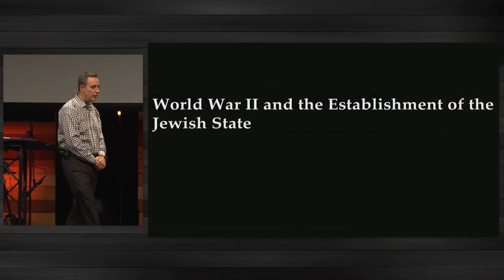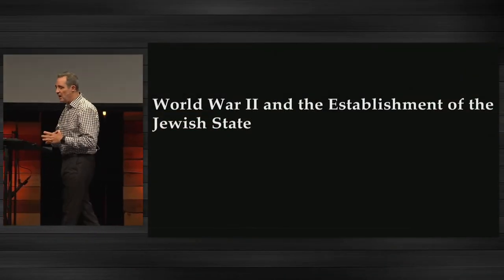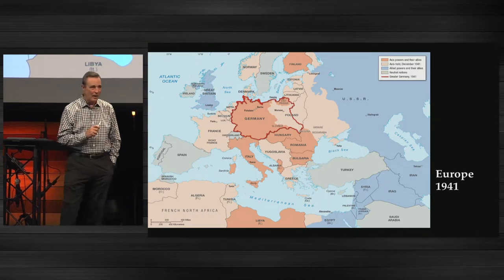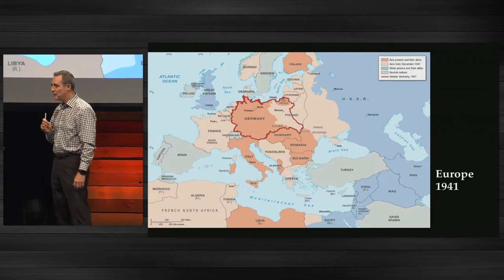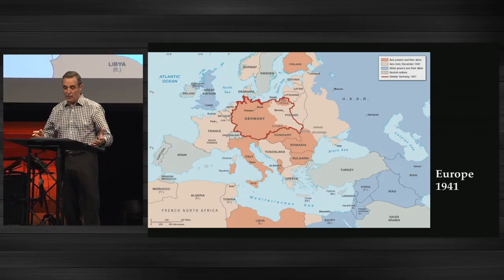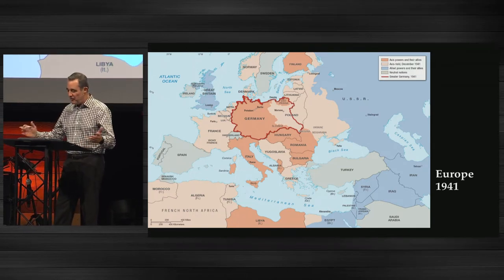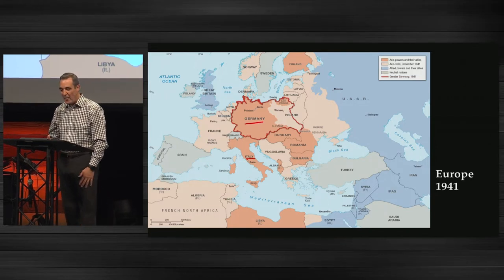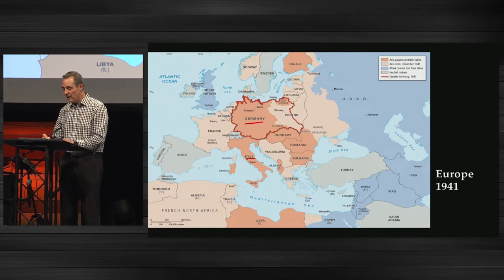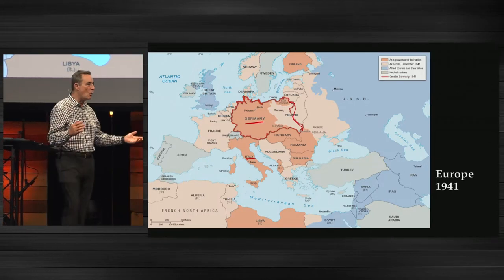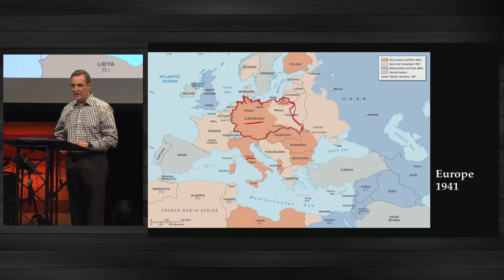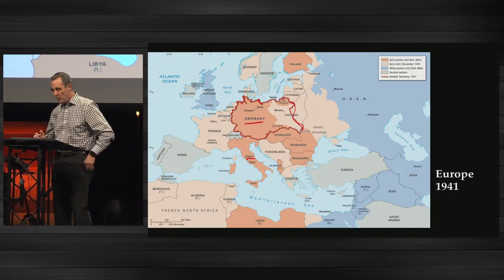The beginning of World War II is the series of events that led to the official establishment of a Jewish state. Basically, you have the Axis powers — Germany, Italy, and others — band together. Germany invades Poland and conquers about half of it, which triggers the war. Adolf Hitler and the German blitzkrieg go conquering, and that triggers France and Great Britain to declare war.